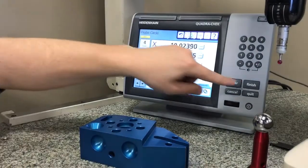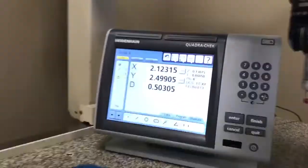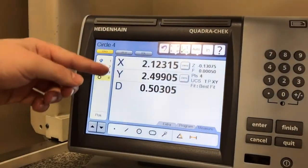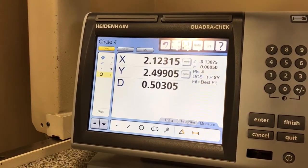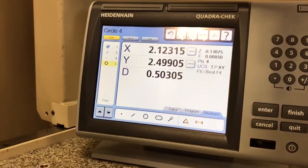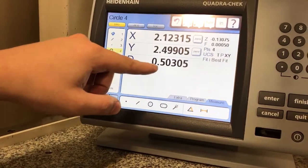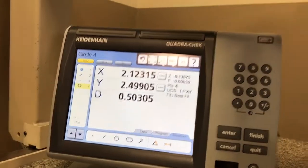And like always, when you're done, press finish. Now you'll notice that'll give you the x-y dimensions of that circle in relationship to our datum, and you'll notice that'll give me the diameter of a half inch circle.